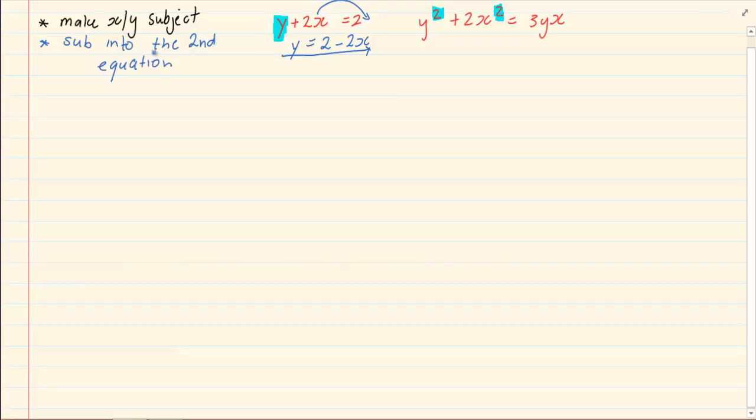So we are going to substitute into the second equation. What that means is, wherever there is a y, I am going to take it out from the second equation and in place of that y, I am going to put 2 minus 2x.